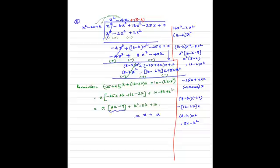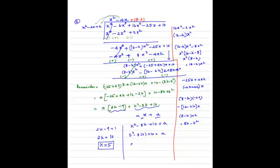Equating the coefficients of x: 2k minus 9 equals 1, so 2k equals 10, and therefore k equals 5. Now substituting k equals 5 into the constant term to find a: a equals k squared minus 8k plus 10 equals 25 minus 40 plus 10 equals minus 5. So a equals minus 5.